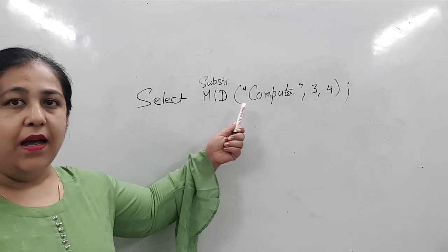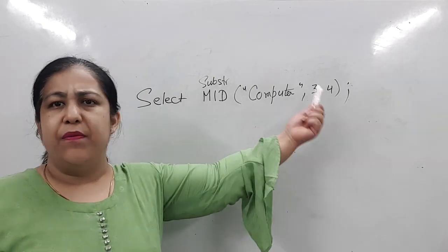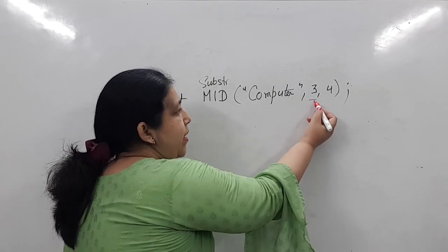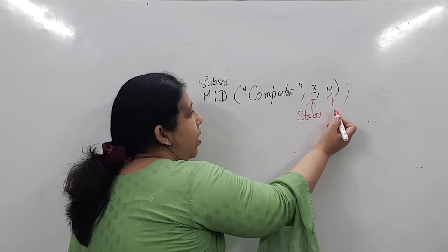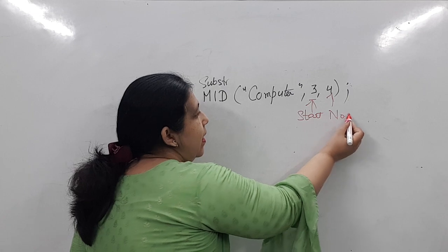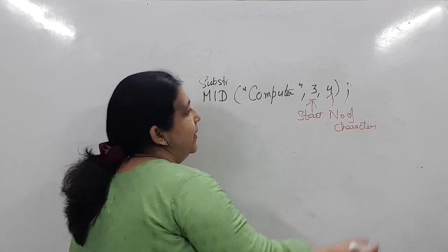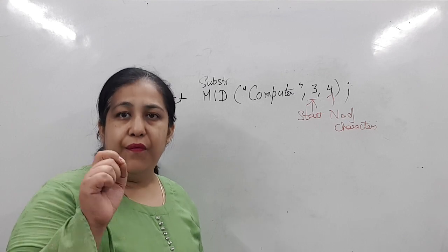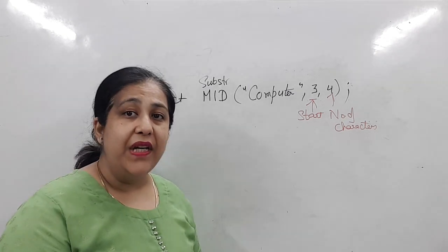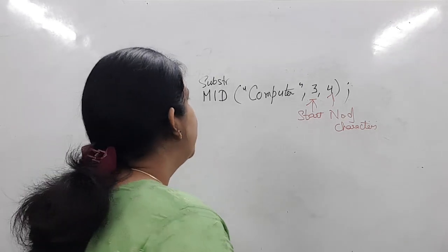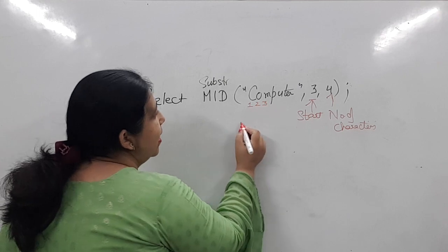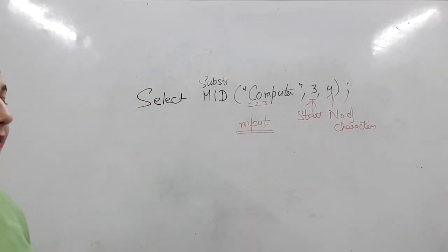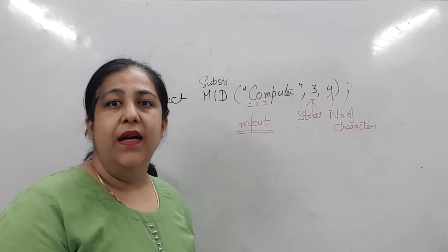What is SELECT MID('computer', 3, 4)? The first argument is the string, the second is the start position, and the third is the number of characters to fetch. So starting from position 3, we fetch 4 characters. Position 1 is C, position 2 is O, position 3 is M — so starting at M, we take M-P-U-T. The answer is MPUT.